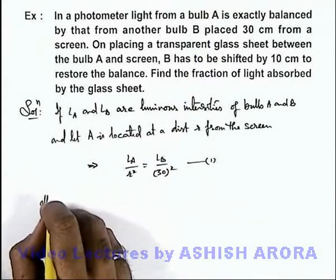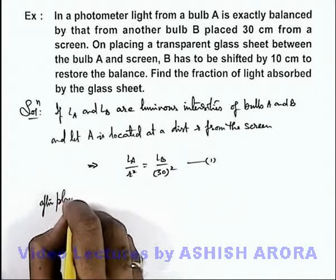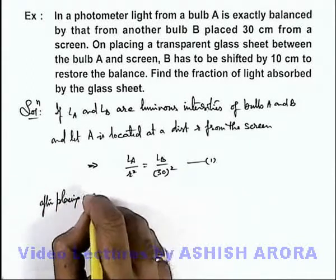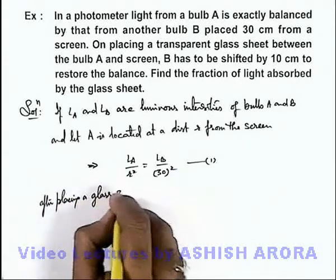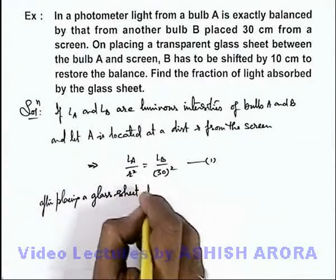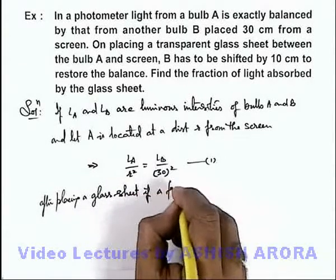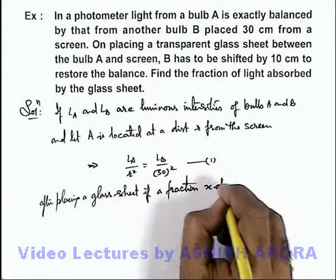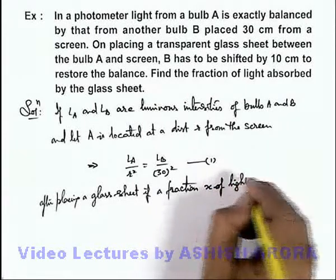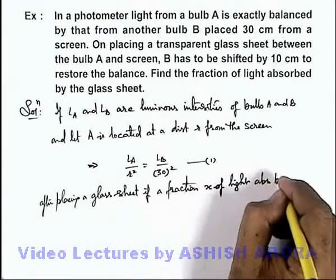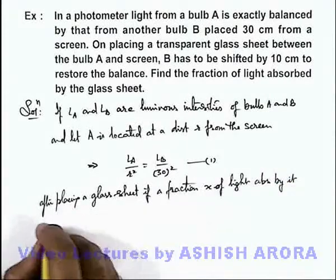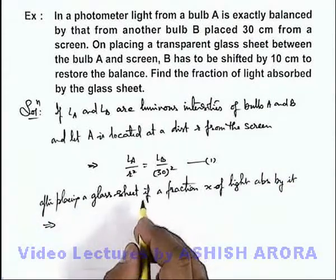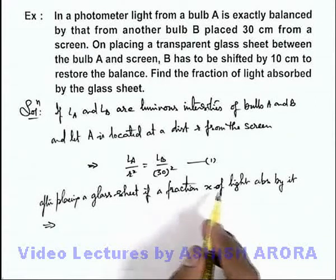Now after placing a glass sheet, if a fraction x of light is absorbed by it, this implies the fraction of light which is passing out will be 1 minus x.